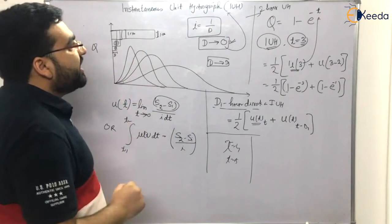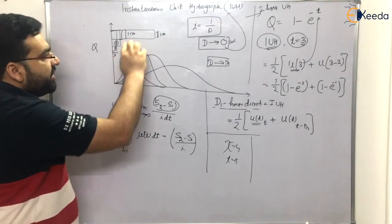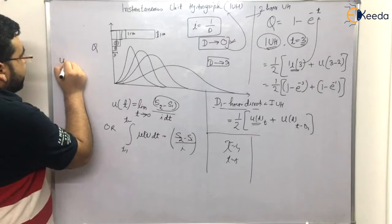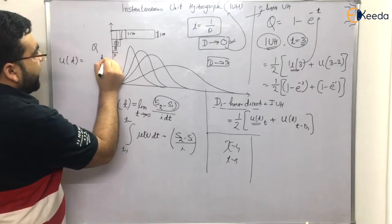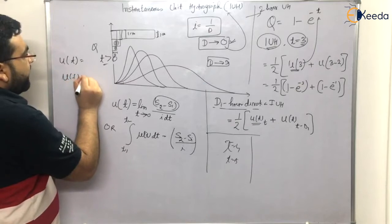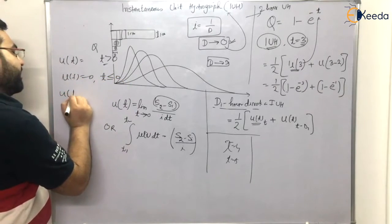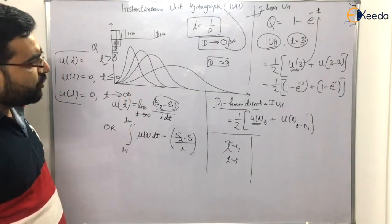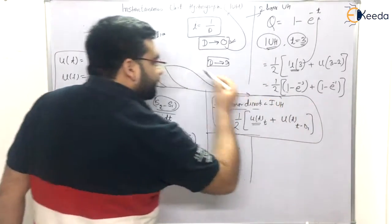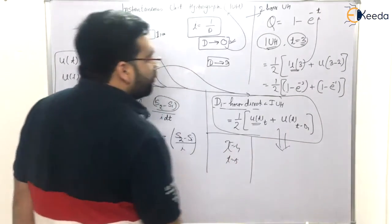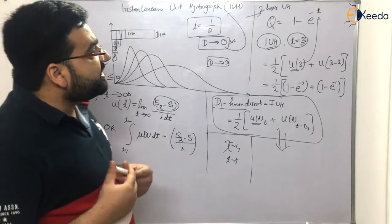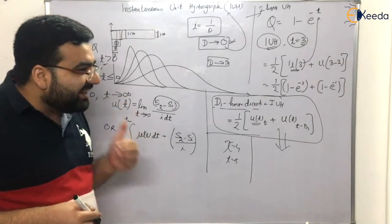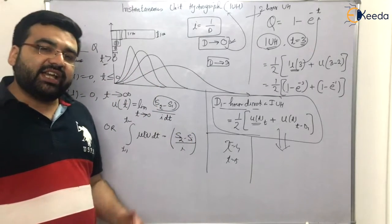The summary of instantaneous unit hydrograph: as the duration of rainfall changes, the curve also changes. Its properties are: U(t) has some positive value if t is greater than zero; U(t) equals zero if t is less than or equal to zero; and U(t) equals zero as t tends to infinity. No need to memorize these properties — just understand the concept. I hope you understood this small topic. Now let us solve some previous GATE questions in the next session.